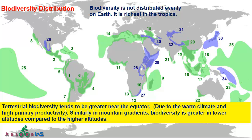As latitude increases, biodiversity decreases — so at high latitudes like the poles, diversity is lower. Similarly, in mountain gradients, biodiversity is greater at lower altitudes compared to higher altitudes. For example, in upper Himalayas, primary productivity and grass are both less, which is why Himalayan bears stay there only during the short growing season and go into deep sleep for about five months otherwise. So with latitude and with altitude, biodiversity decreases.